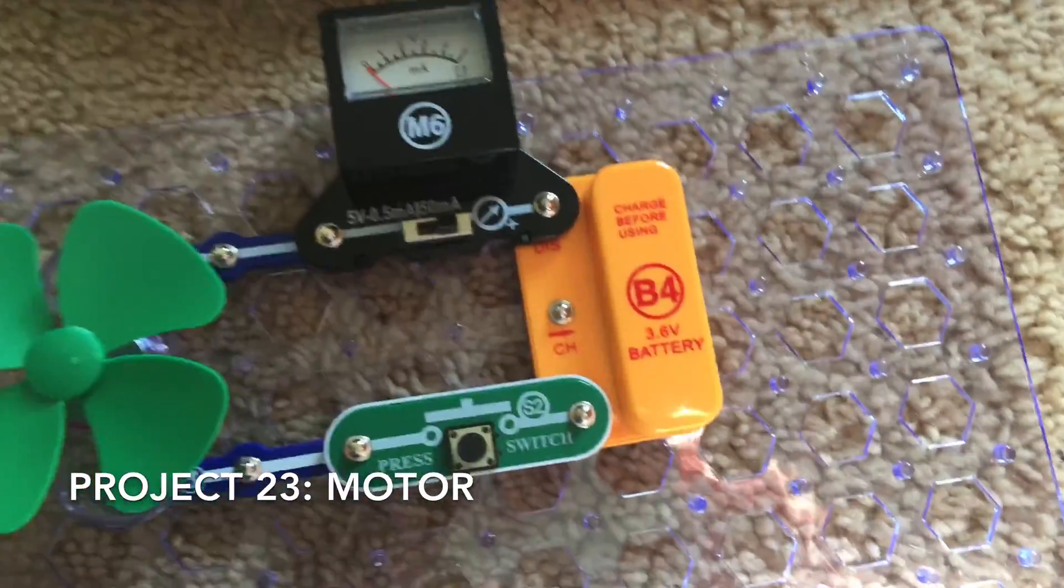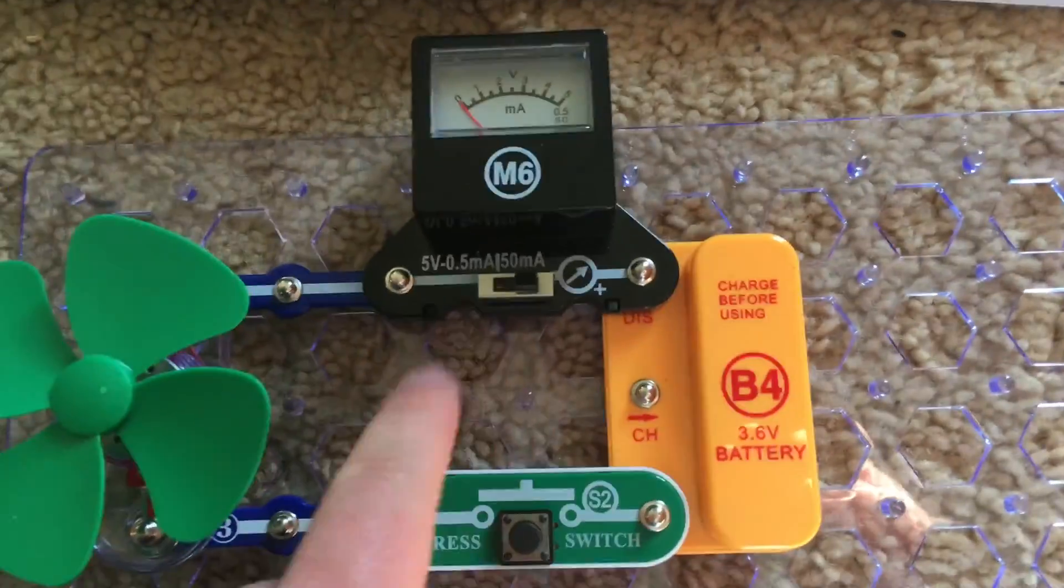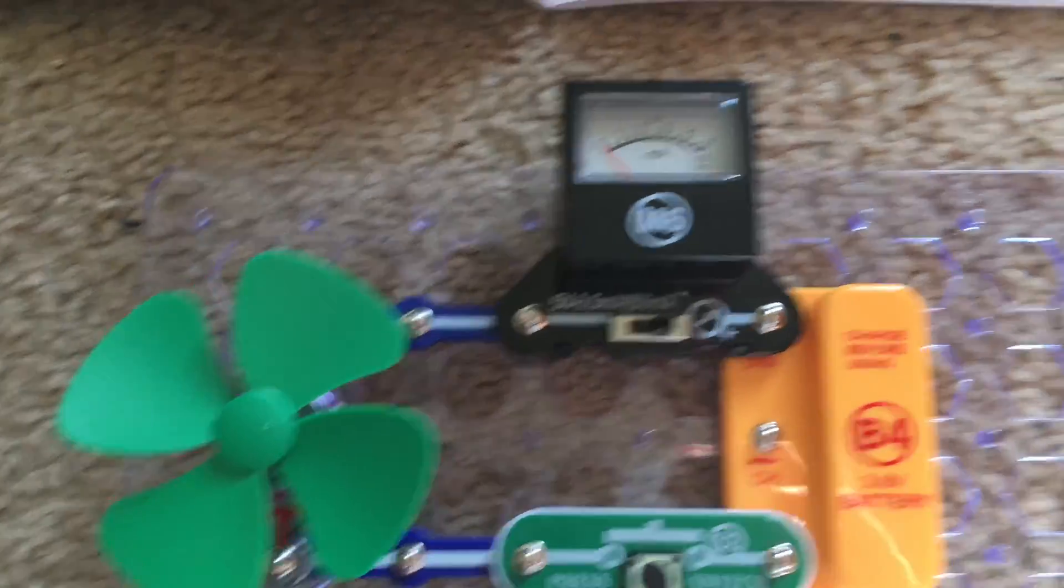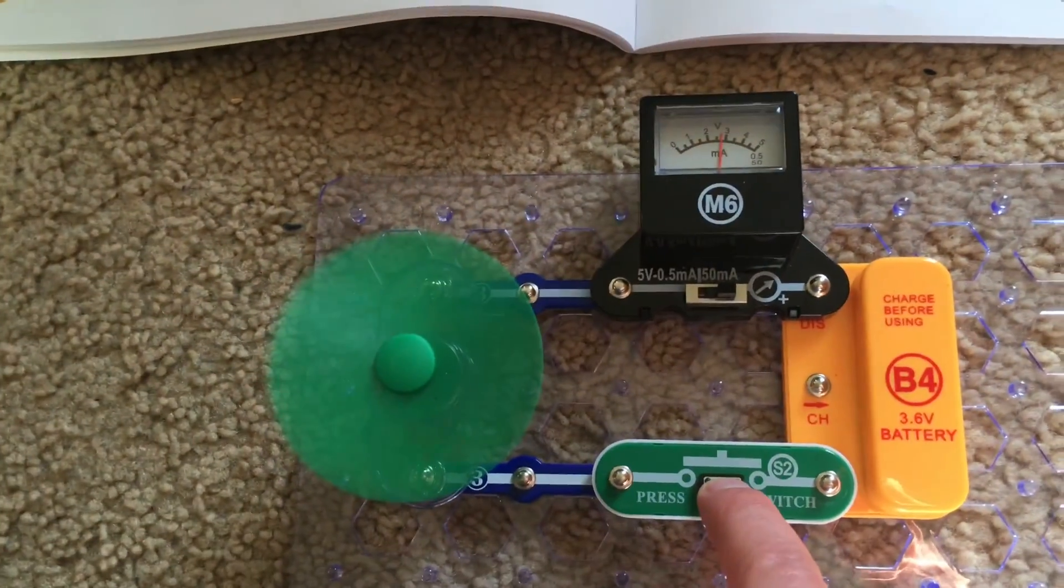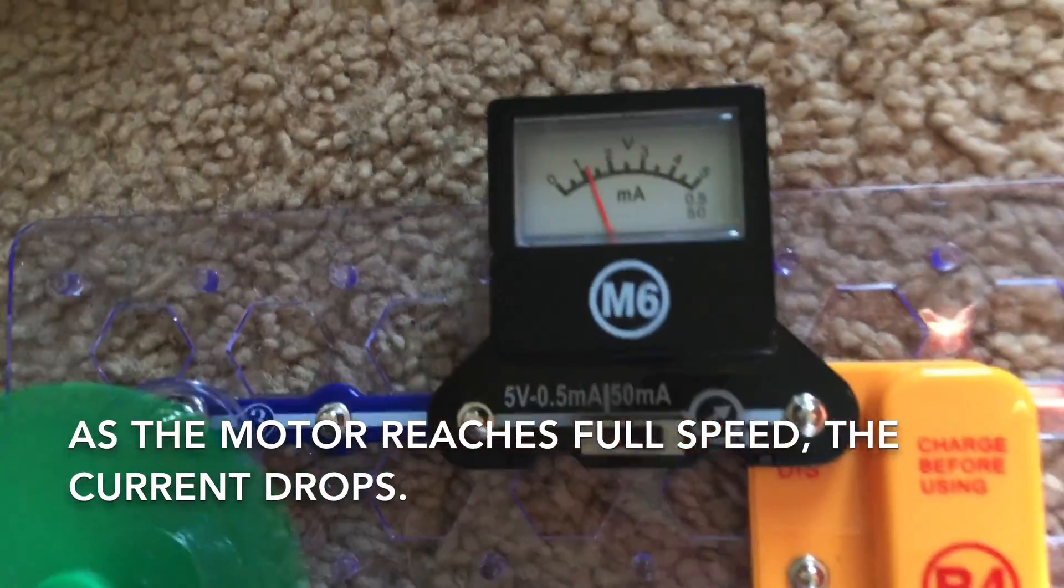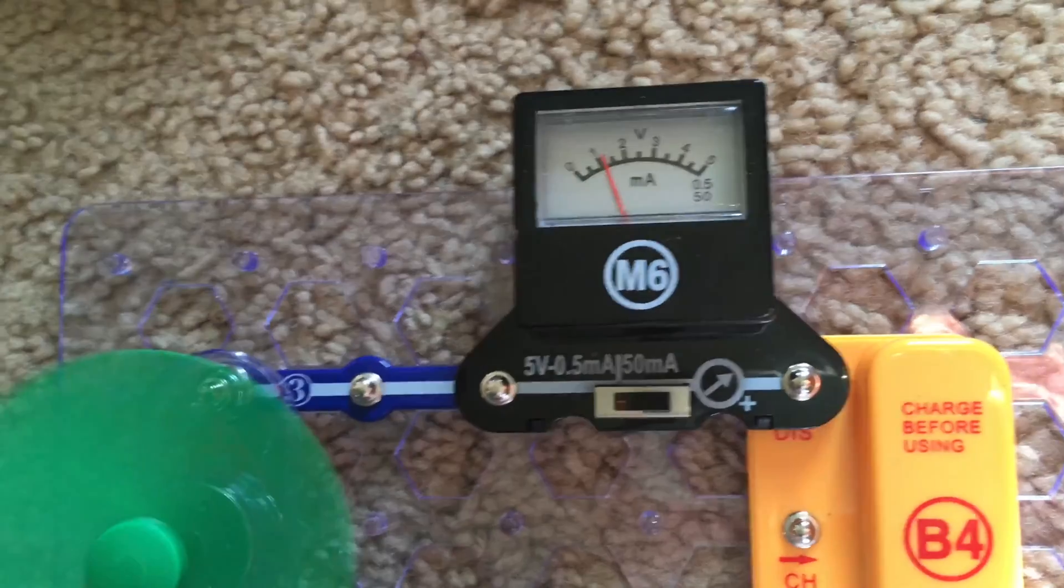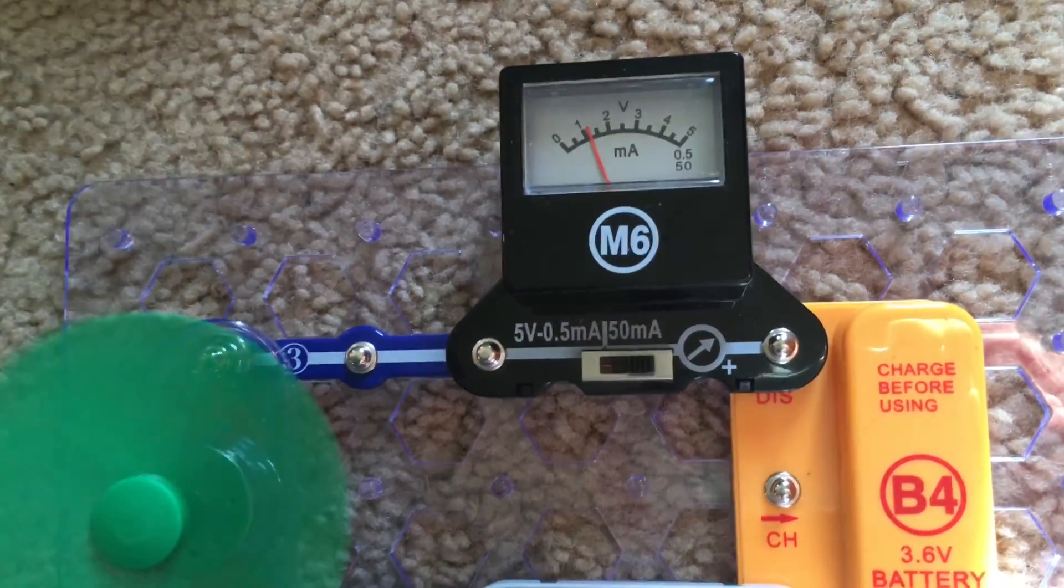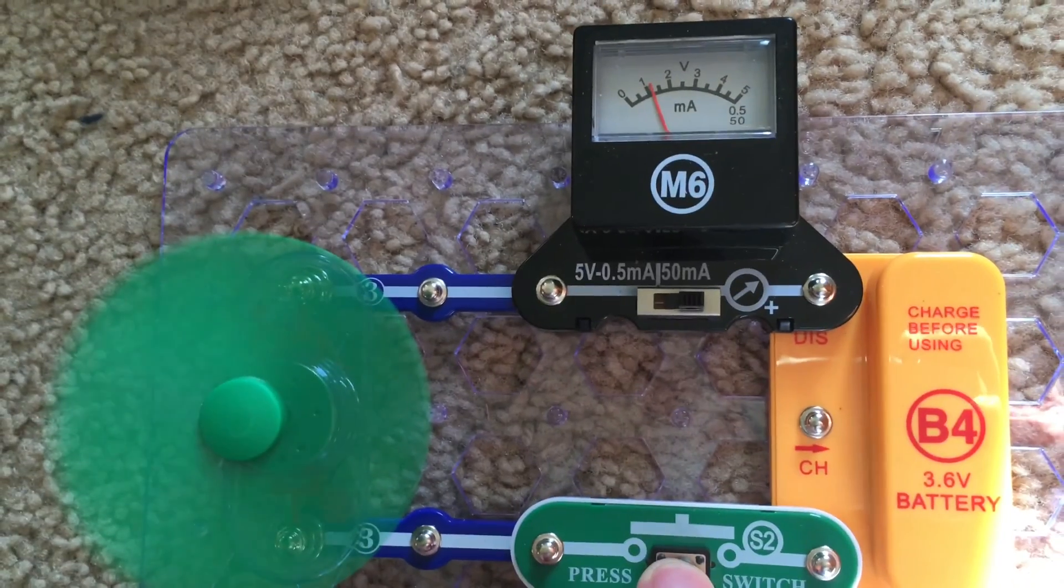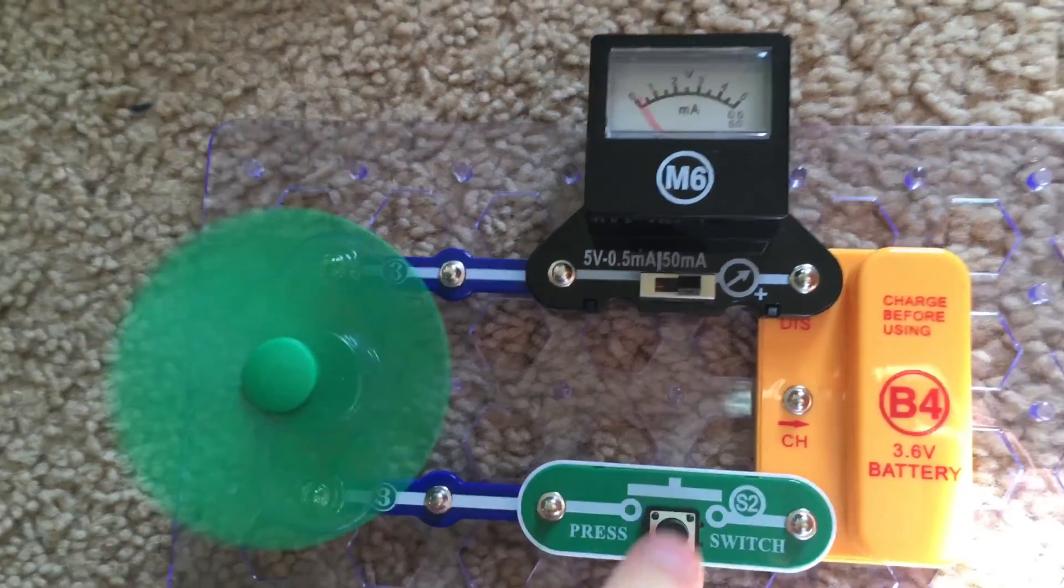We're going to demonstrate the motor with the meter set to the 50 milliamp setting. We're going to hold down the press switch and the motor will spin. As it spins you may notice that the current is initially high when the motor starts up but then it decreases a bit as it reaches full speed. Let's do that again.